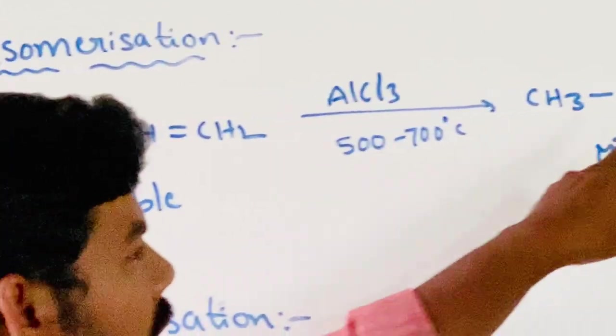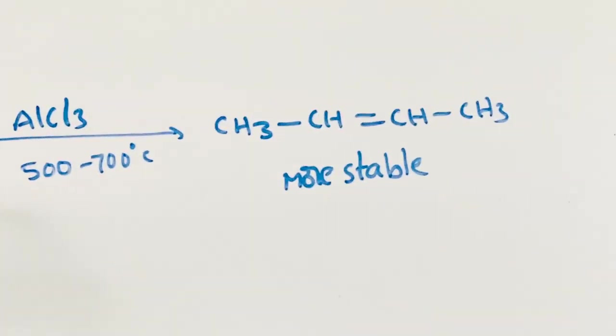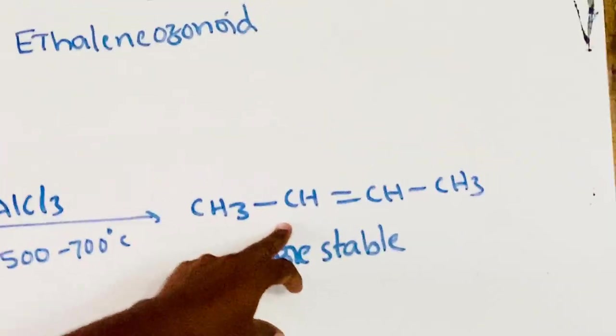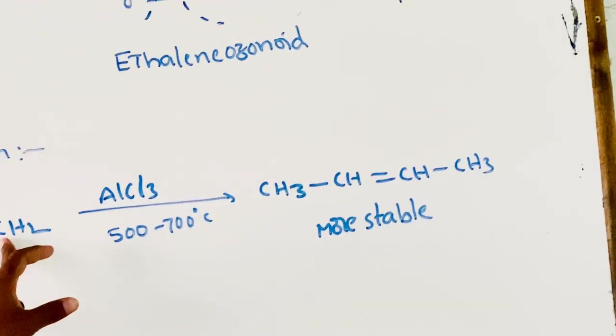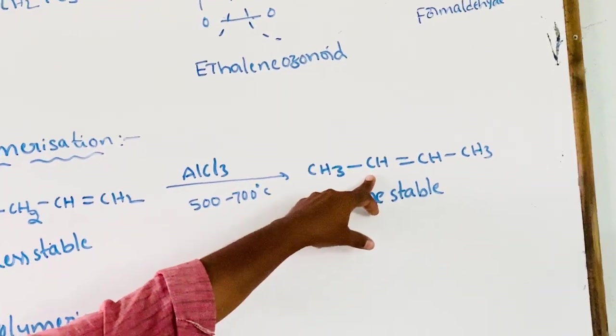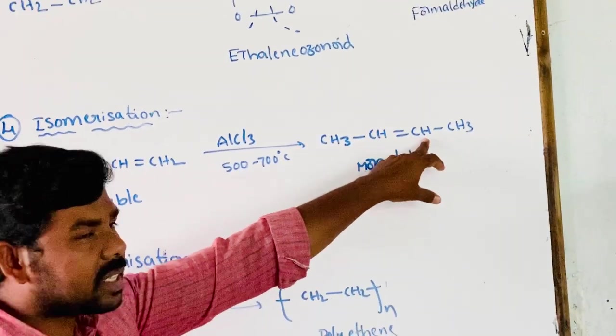1-butene is converted into 2-butene. 1-butene is less stable; 2-butene is more stable. That is, primary is less stable than secondary cations.